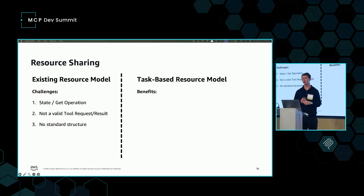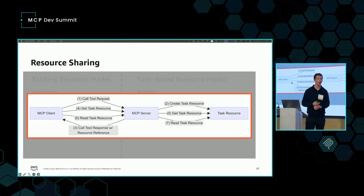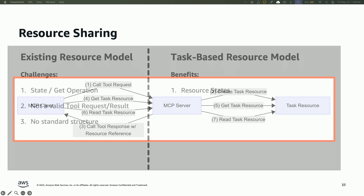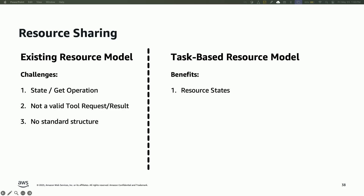This brings me to a task-based resource model as one potential solution. In this model, a client could send a call tool request, and a server could create a resource and send back in the response a resource reference with a status. Now the client can poll on the status of that resource — is it ready to be consumed? Once it's ready, the client can fetch it. I think this architecture will actually become really common in MCP once resources have statuses, because we can create broadly interoperable systems where we can reliably predict the current state of the other system.